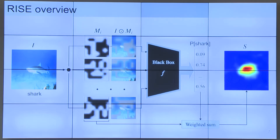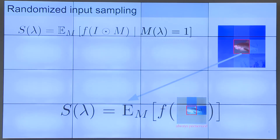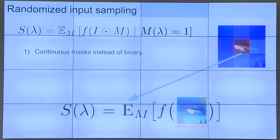The reason why it works is that whenever important information is preserved in the image, it will get a higher score from the black box model. Since we are treating scores as weights, this means that the mask will get a higher weight in the sum, and the final sum will have more important information combined, highlighting the important region of the image. We show that this process is equivalent to taking an expectation — basically an expectation of all the scores of randomly masked images, conditioned on that region lambda being preserved. So the saliency for region lambda is computed like this, and from this formulation we take two approximations to get to our final method.